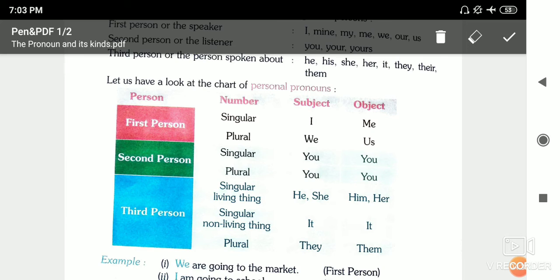For singular non-living things, we use 'it'. For animals and birds also we use 'it'. For non-living things like table, fan, house, chair, book, pencil - all these use 'it'. If they are plural in number, we will use 'they'.